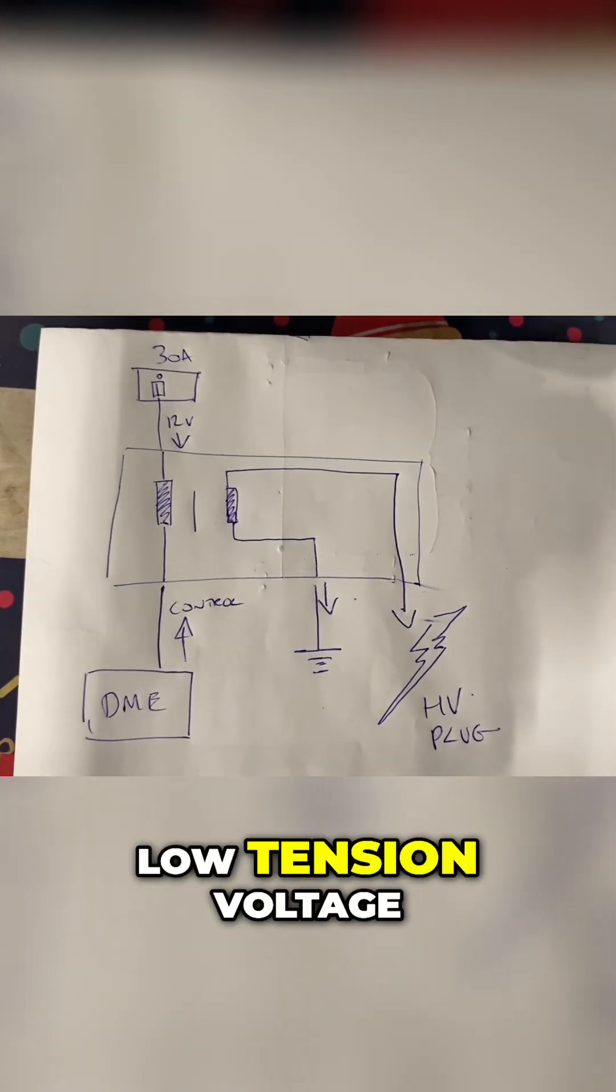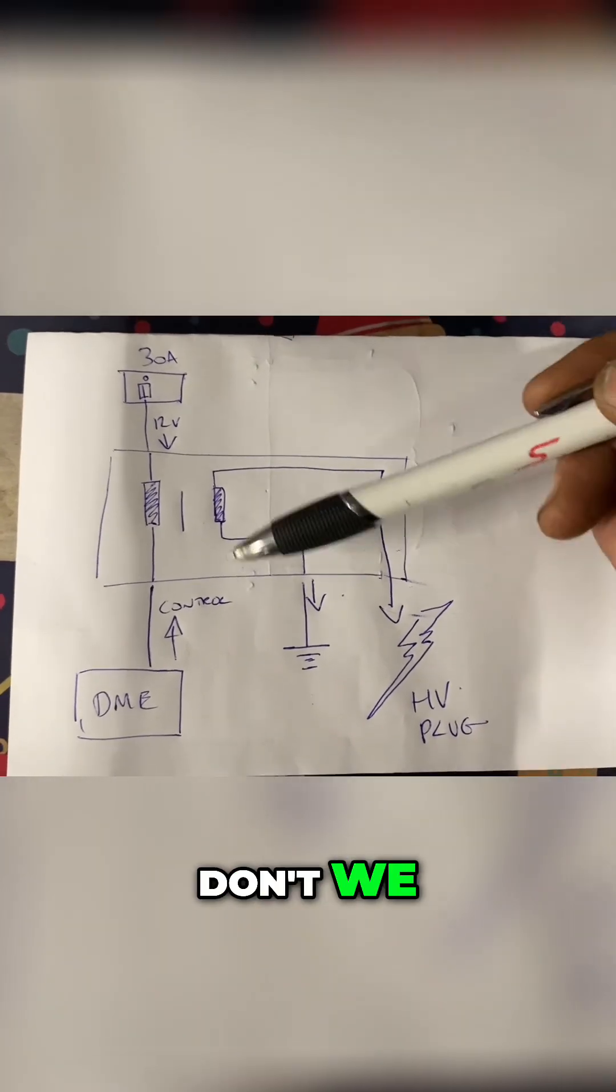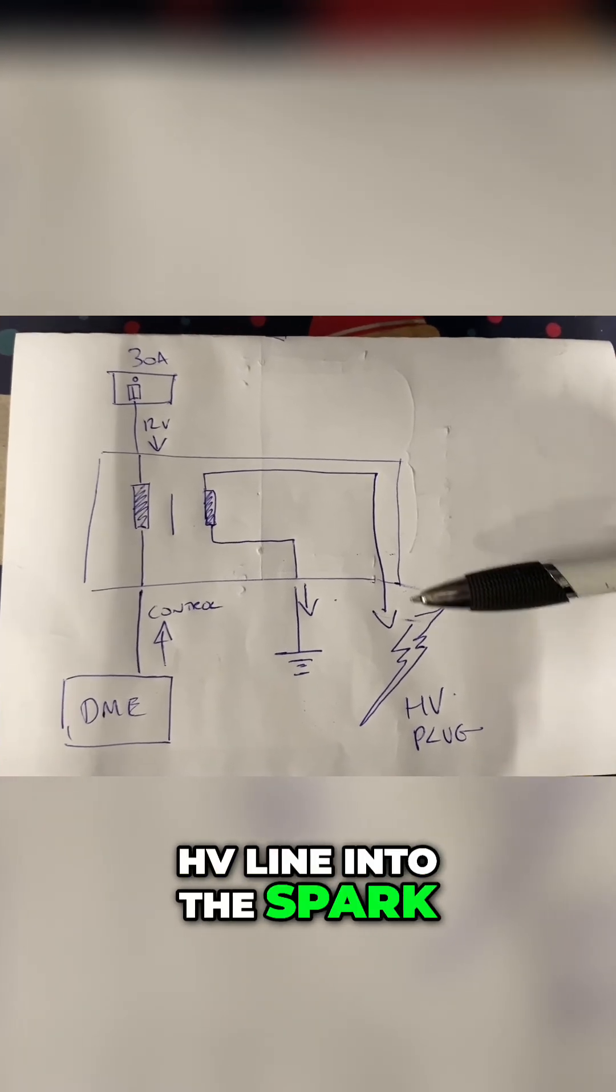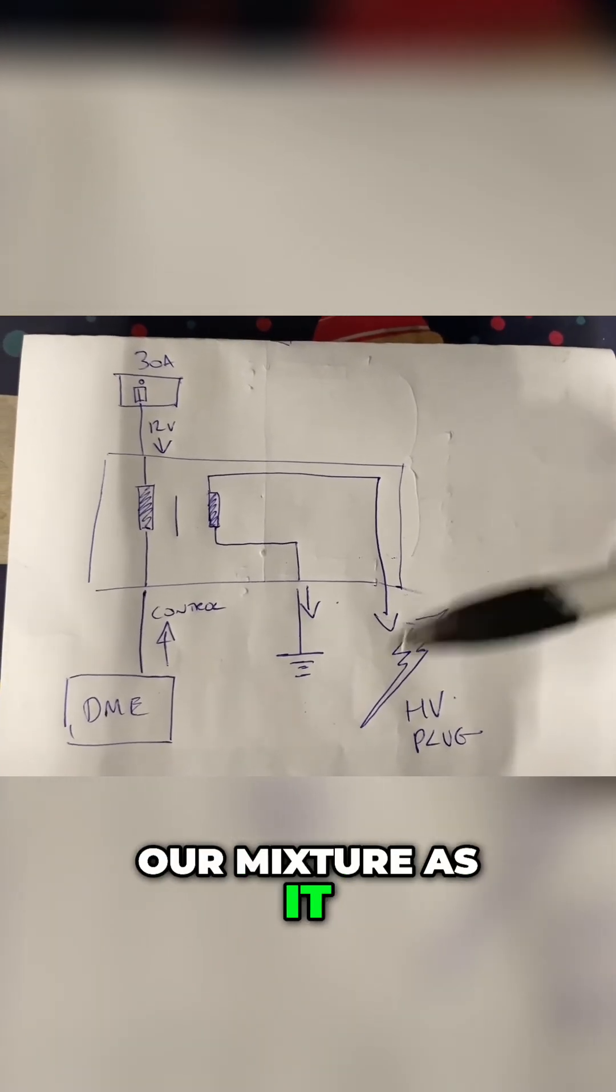We always have a primary voltage which is a low tension voltage, and we have a high voltage which shoots down the HV line into the spark plug. That's what ignites our mixture as it jumps across the gap.